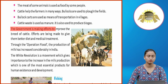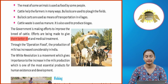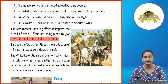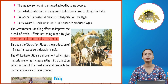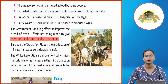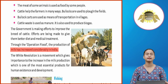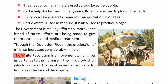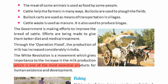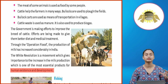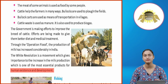The government is making efforts to improve the breed of cattle, giving them better diet and medical treatment. Through Operation Flood, the production of milk has increased considerably in India. The White Revolution is a movement which gives importance to the increase in milk production, which is one of the most essential products for human existence and development.